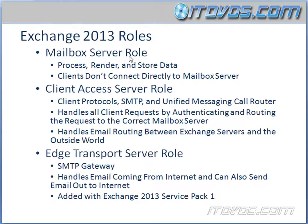The first role is the Mailbox Server role. This is definitely the most critical role. What it does is it processes, renders, and stores the data. So this is where our emails actually live. We're sending emails throughout our organization and they're stored on our Mailbox Server. So if we lost our Mailbox Server, we would lose those emails.